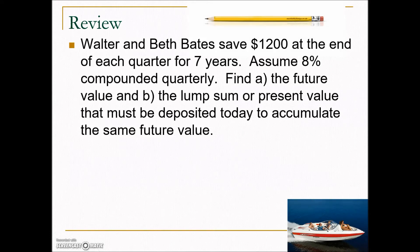We've got a couple of practice problems here involving finding present value and future value of annuities. Walter and Beth Bates save $1,200 at the end of each quarter for 7 years, assume 8% compounded quarterly, and we need to find the future value and the lump sum or present value that must be deposited today to accumulate the same future value.